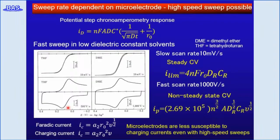At the microelectrode, the limiting current is described by the Saito equation. The current is proportional to the electrode radius, and no scan rate term appears in the equation. However, at fast scan rates, the current is described by an equation including the square root of scan rate and electrode area, which is the same as in the conventional CV case.